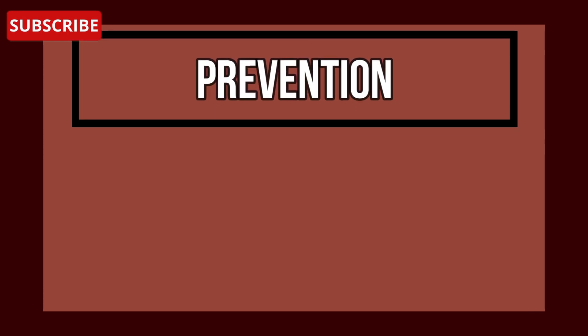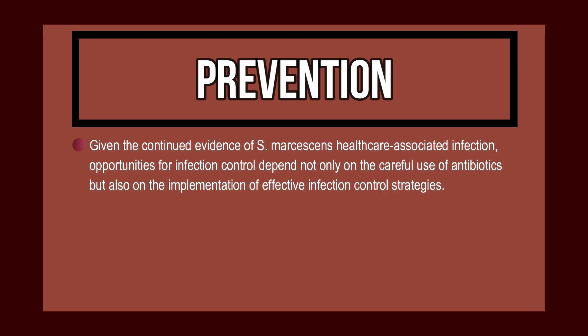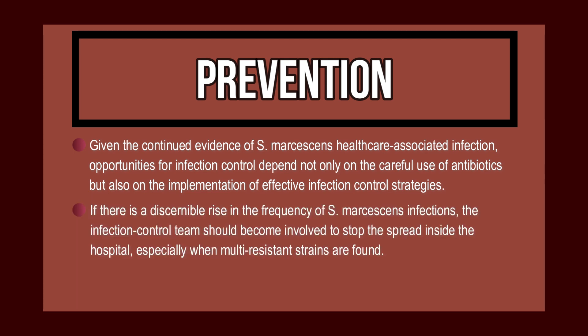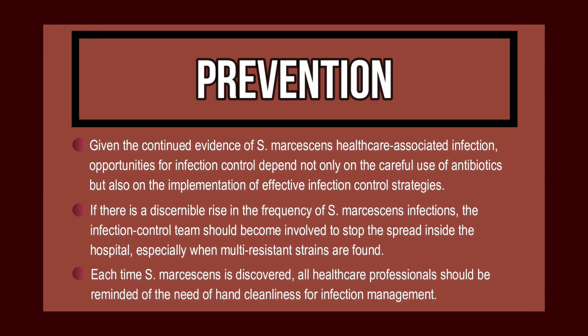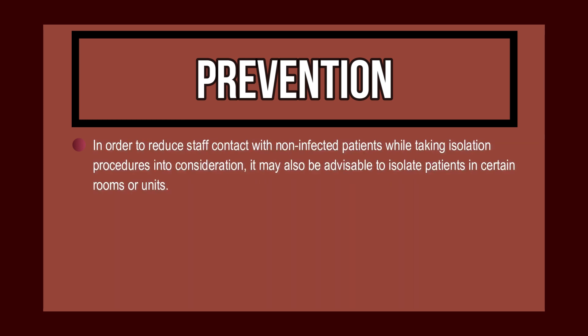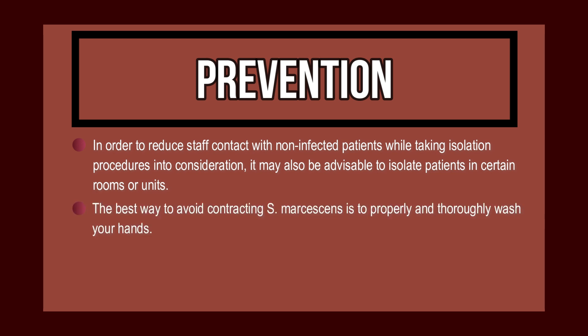Prevention of Serratia marcescens: infection control depends not only on the careful use of antibiotics but also on effective infection control strategies. If there is a rise in the frequency of Serratia marcescens infections, the infection control team should become involved to stop the spread inside the hospital, especially when multi-resistant strains are found. Healthcare professionals should be reminded of hand hygiene, and isolating patients in certain rooms or units may be advisable. The best way to avoid contracting Serratia marcescens is to properly and thoroughly wash your hands.